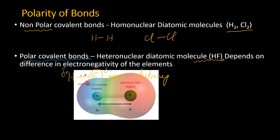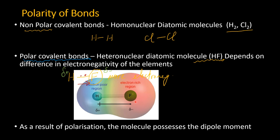The electron density is more shifted toward the fluorine atom, making hydrogen electron-poor. This polarization — caused by the difference in electronegativity between hydrogen and fluorine — results in a dipole moment. Such molecules that have partial charges are said to possess a dipole moment.